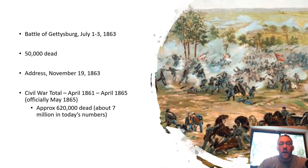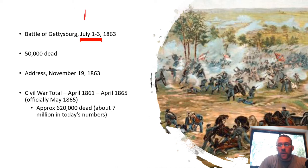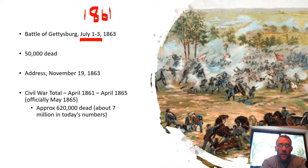The Battle of Gettysburg happened over a four-day period, July 1st to the 3rd of 1863. The Civil War started in the spring of 1861. Lincoln was inaugurated into office in March of 1861 — inaugurations used to happen in March, now they happen on January 20th. He was elected in 1860 but inaugurated and put into his presidency in March of 1861. Almost immediately afterward, the first shots were fired and the Civil War began.